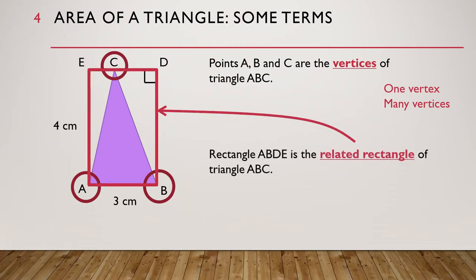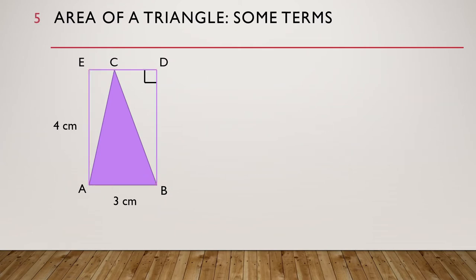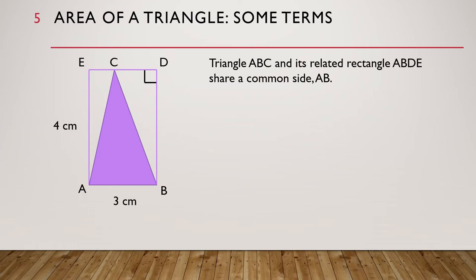Rectangle ABDE is called the related rectangle of triangle ABC. Notice that triangle ABC and its related rectangle ABDE share a common side AB, which is this.